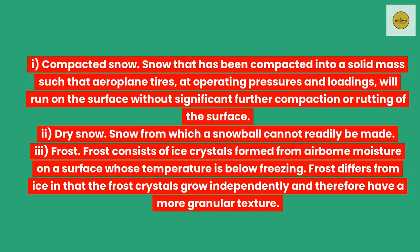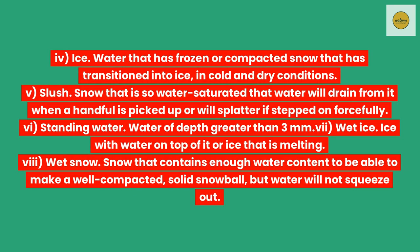Dry snow. Snow from which a snowball cannot readily be made. Frost. Frost consists of ice crystals formed from airborne moisture on a surface whose temperature is below freezing. Frost differs from ice in that the frost crystals grow independently and therefore have a more granular texture. Ice. Water that has frozen, or compacted snow that has transitioned into ice, in cold and dry conditions. Slush. Snow that is so water saturated that water will drain from it when a handful is picked up, or will splatter if stepped on forcefully. Standing water. Water of depth greater than 3 mm. Wet ice. Ice with water on top of it or ice that is melting. Wet snow. Snow that contains enough water content to be able to make a well-compacted solid snowball, but water will not squeeze out.